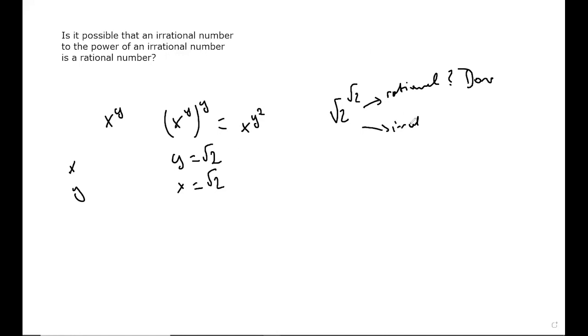If it's irrational, well then, square root of two to the power of square root of two, if this is our x, to the power of square root of two, is going to be equal to the square root of two to the power of square root of two times square root of two, which is square root of two squared, which is equal to two, which is rational.